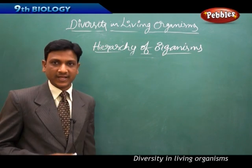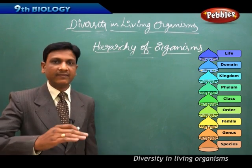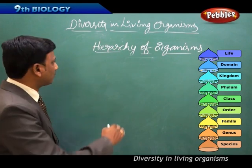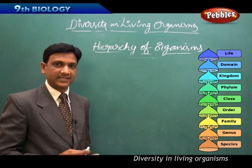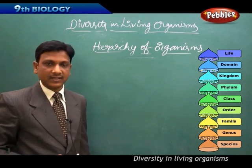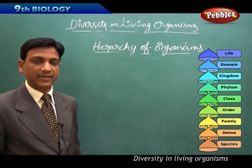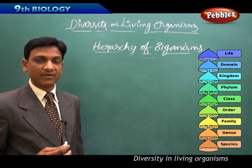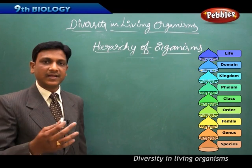Let us look at the hierarchy of organisms. If we see the different levels in the organization, the different levels in the classification, we can observe the hierarchy. By looking at the hierarchy, we will understand that at the higher level in the hierarchy, there will be so many organisms. The higher category will be a very large category with very large number of animals, which have many differences and less similarities.